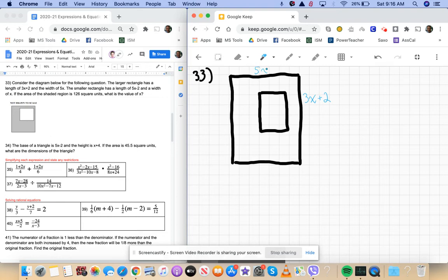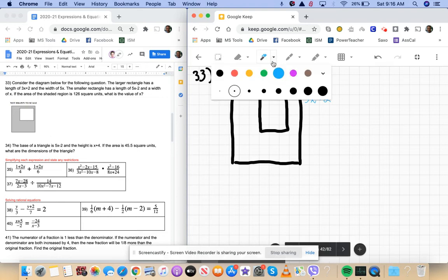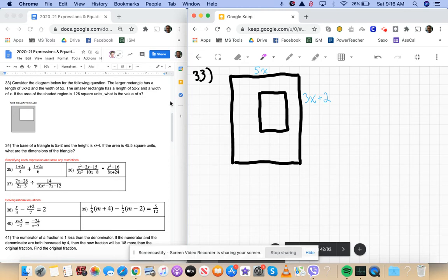That's 5x, and then our other small rectangle has a length of 5x plus 2, so that's 5x minus 2, sorry, and a width of x. There we go.